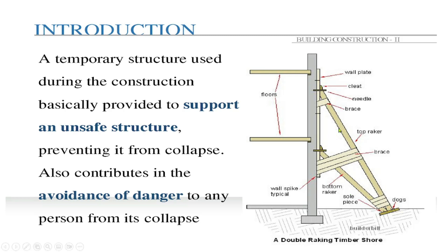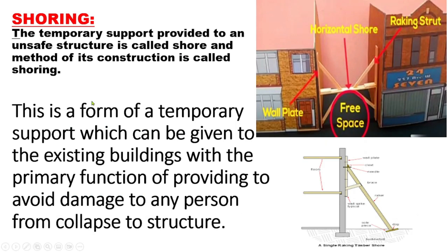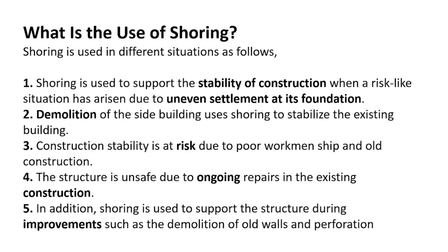Other components are called braces, which provide stability against weakness of the structure. The technical terms in shoring are: wall plate, needle, cleat, braces, and raker. The temporary support provided to an unsafe structure is called shoring, and the method of construction is also called shoring.